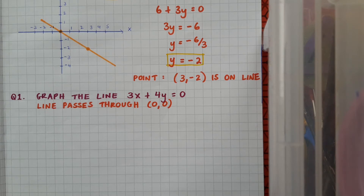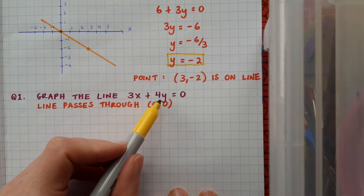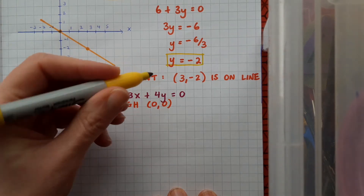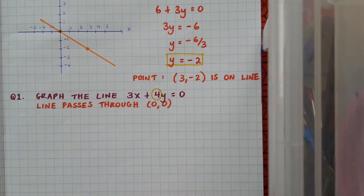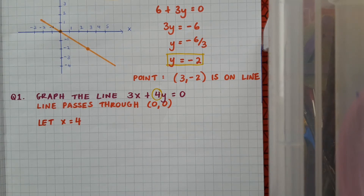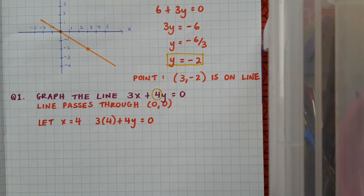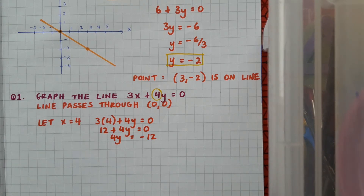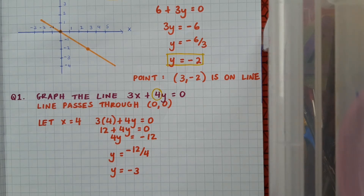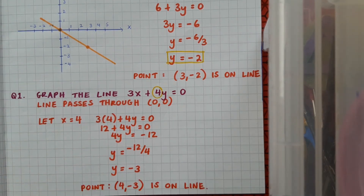I'll need to substitute a value in for x, and I'd like to pick a number that'll give me a nice round answer, although in reality any value will work. So I'll look at my other variable, y, and its coefficient 4 is what I'm going to use to substitute in for x. Letting x equal 4, I get 3 times 4 plus 4y equals 0. I'll do my multiplication first, bring 12 across the equal sign, then divide by 4 to get minus 3. So the point (4, −3) is on that line.